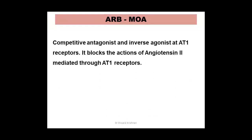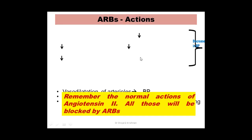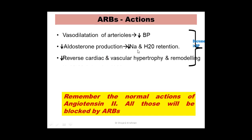Mechanism of action: ARBs are competitive antagonists at the AT1 receptors. Angiotensin 2 produces its effects by acting on AT1 receptors, and these drugs block those receptors. As a result: vasodilatation of arterioles, decrease in blood pressure, decrease in aldosterone production, decrease in sodium and water retention, and reversal of cardiac and vascular hypertrophy and remodeling.